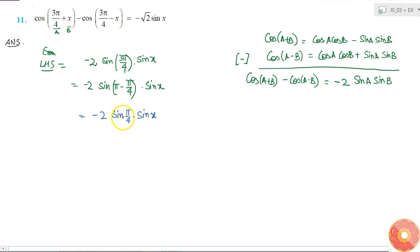I know the value of sin(π/4) is 1/√2, so it is equal to minus 2/√2 into sin x. So 2/√2 can be written as √2, which is equal to minus √2 sin x, which is same as the RHS.